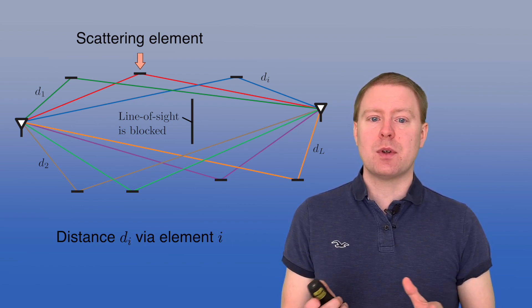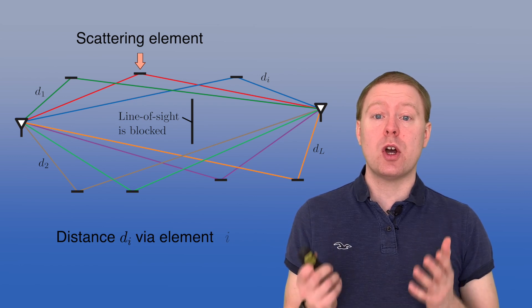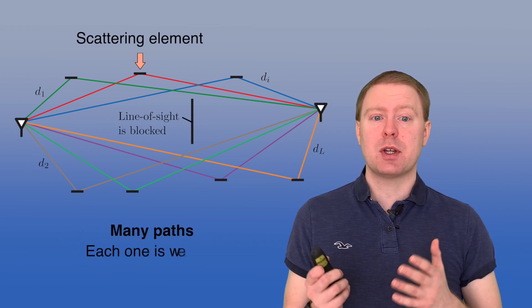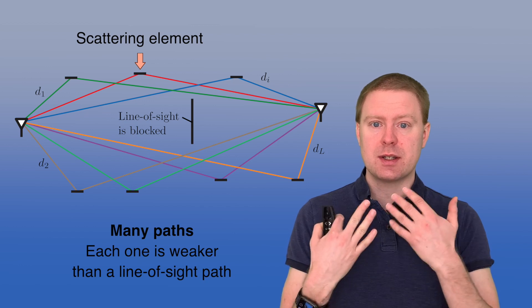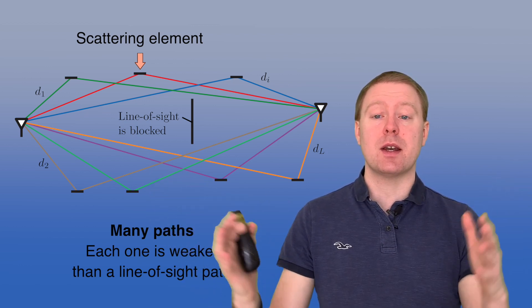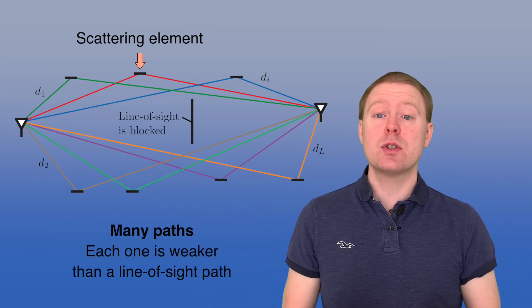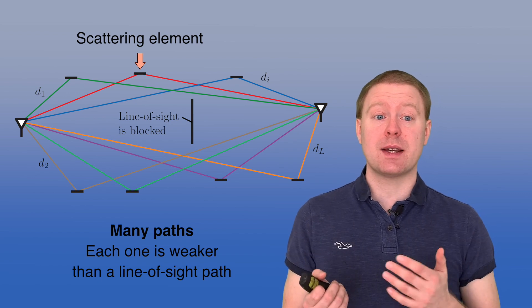And even if you have many paths, usually you have a worse channel gain because all this scattering is taking the signal that reaches a rough surface and scatters it in many directions and thereby you're losing a lot of the power. But the important thing is that you at least get some received power at the receiver side.